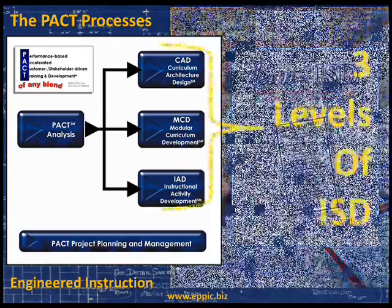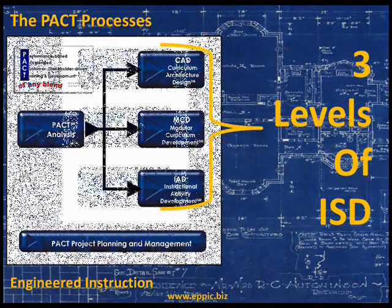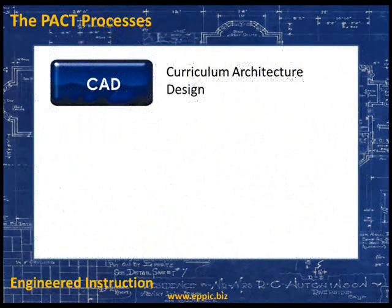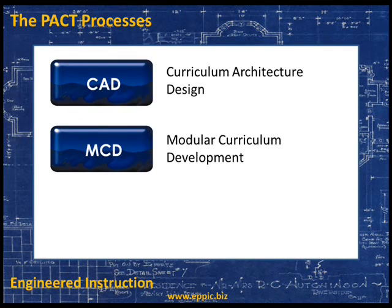The PAC processes has three levels of instructional systems design: CAD, MCD, and IAD. Curriculum architecture design looks at an entire target audience's required learning continuum, from the very beginning of onboarding through the very end of their career development. The curriculum architecture design is intended to take a person down the learning path to performance competence. Modular curriculum development is the ADDIE-like level, the new product development level of the PAC processes. This is where courses, workshops, or what the PAC processes calls modular events, are produced.